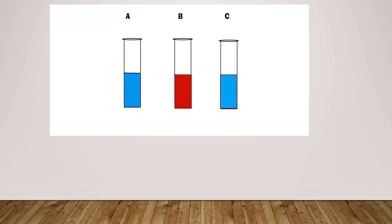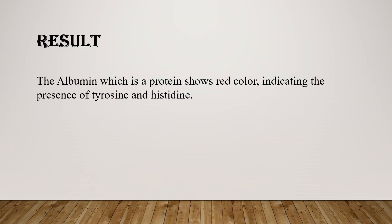So here is our result. Only test tube B shows red color. It means tyrosine or histidine are present in test tube B. The albumin, which is a protein, shows red color indicating the presence of tyrosine and histidine.